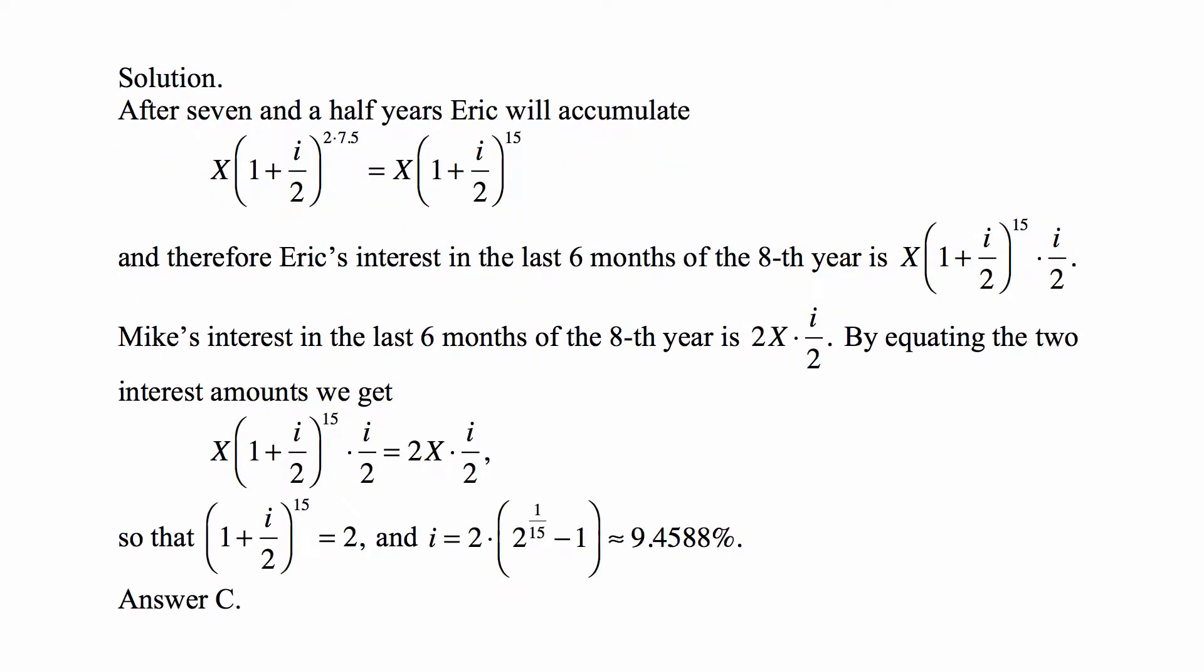So after seven and a half years, Eric will accumulate X, the initial deposit, times 1 plus I over 2 to the power of 2 times 7.5, because it's a nominal annual rate compounded per every half a year. So that's why I divided by 2 and then to the power of 2 times the number of years, which is 7.5. So it's X times (1 plus I over 2) to the fifteenth.